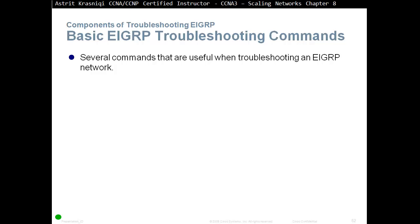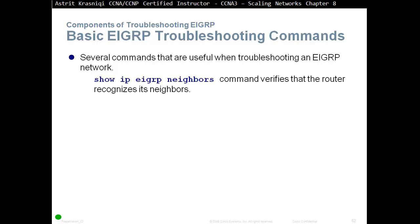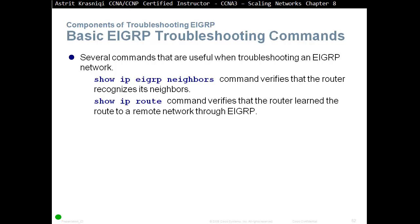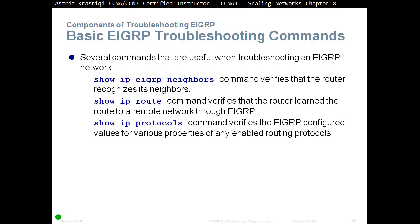Basic EIGRP Troubleshooting Commands. Several commands that are useful when troubleshooting EIGRP networks are, for example, Show IP EIGRP Neighbors — this command will verify that the router recognizes its neighbors. Show IP Route — this command will verify that a router has learned the route to a remote network through EIGRP. Show IP Protocols — this command verifies the EIGRP configuration values for various properties of any enabled routing protocols.